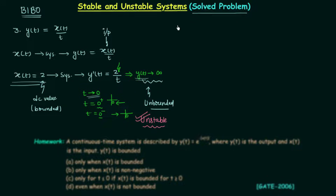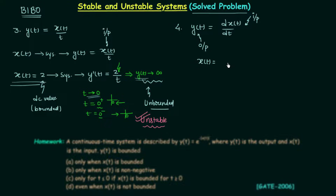Now let's move to problem number 4. Here the output y = dx/dt — we are differentiating the input x one time to get the output. We will take a bounded DC input, x = 4, and feed it to our system. The system differentiates the input, so y(t) = d(4)/dt. Since 4 is constant it does not change with time, so d(4)/dt = 0.